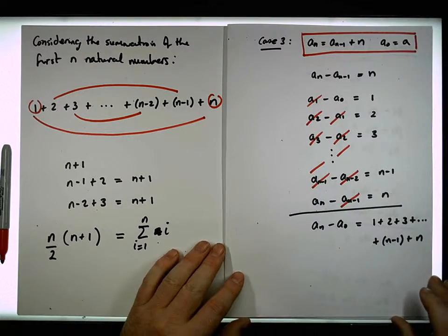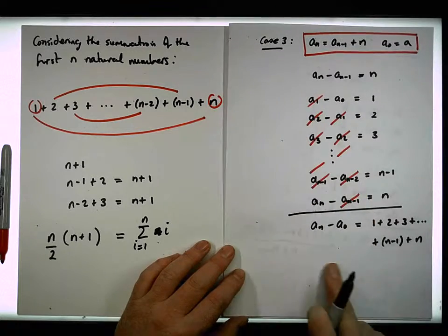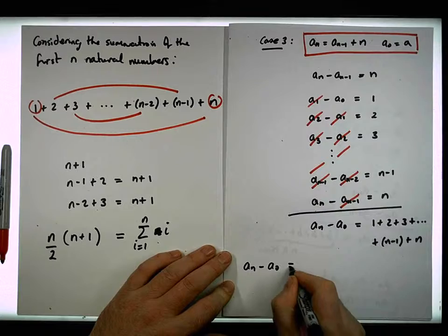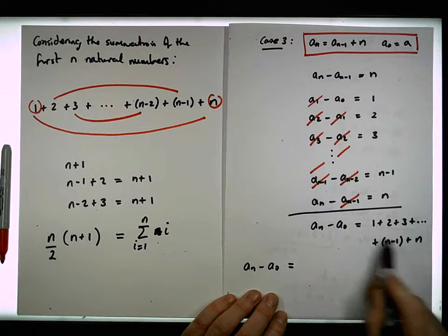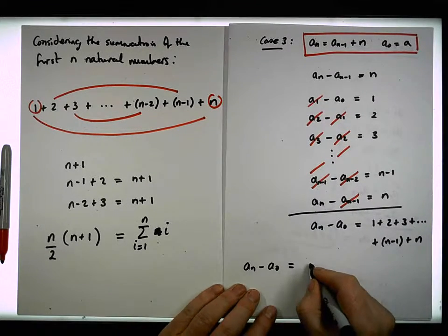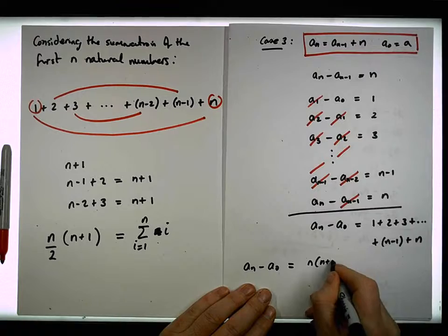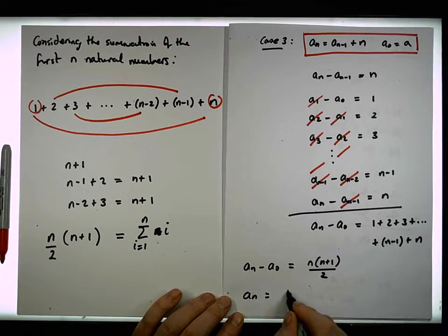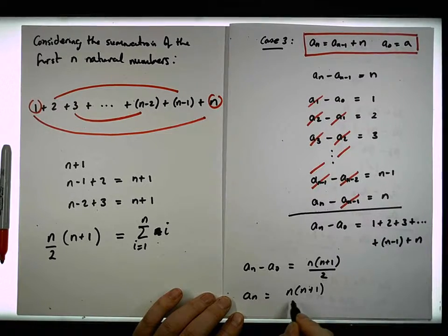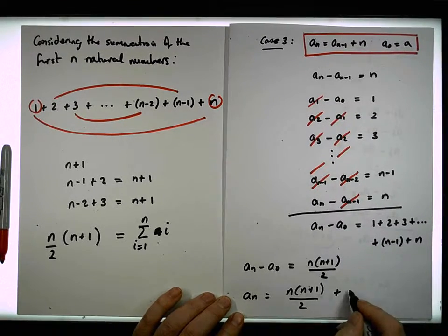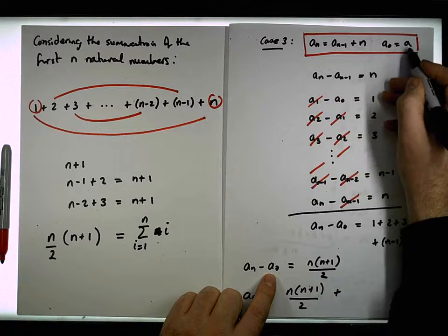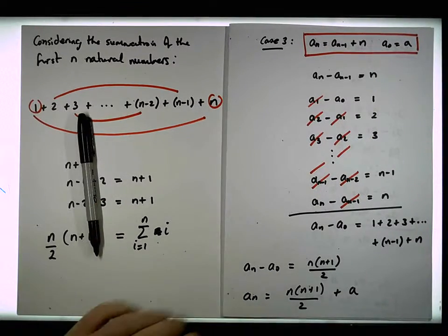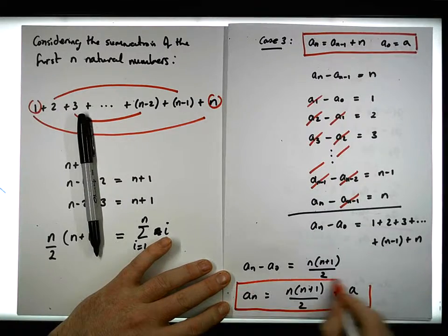So effectively now what we have is, going back to our case 3, we now know that an minus a0 must be equal to the summation of the first n natural numbers, which is simply n times n plus 1 over 2. So we end up with an must be equal to n times n plus 1 over 2 plus a0, and a0 is simply equal to a. This is our closed form solution.